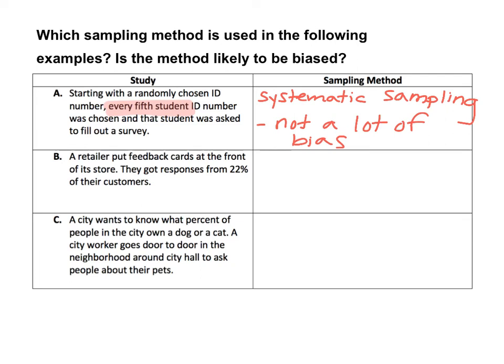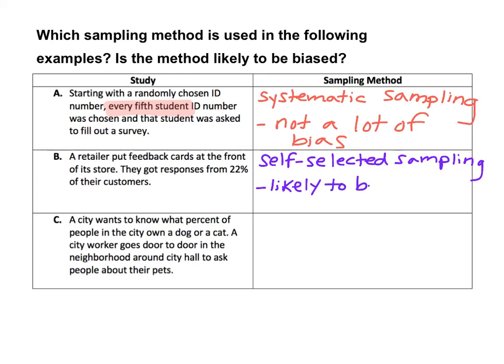For the second example: suppose a retailer puts feedback cards at the front of its store and got responses from 22% of their customers. Here, customers get to choose whether or not they fill out those feedback cards, so that's self-selected sampling. With self-selected sampling, there is always a high risk of bias, so the results of that survey may not be good — there's likely to be bias.